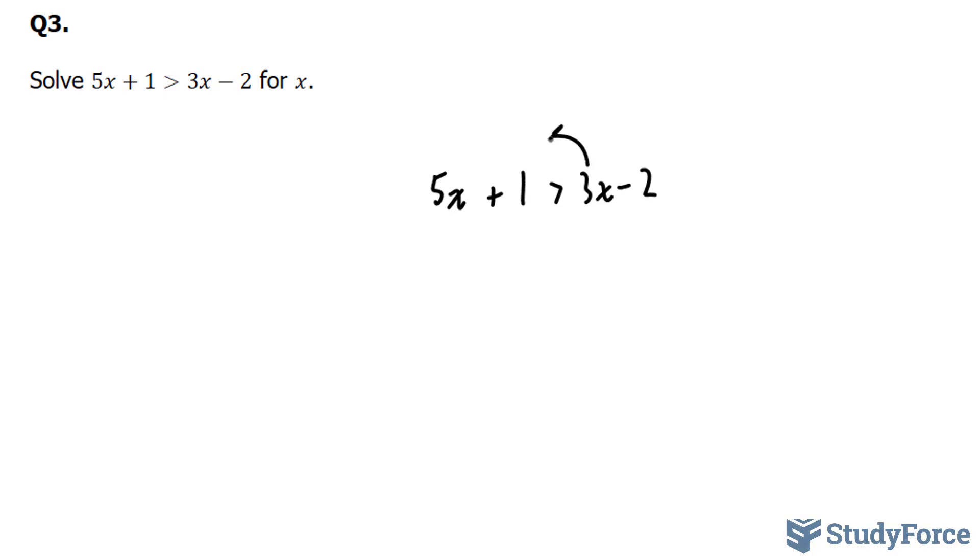So I'm going to bring this over, and I'm going to bring this over. We end up with 5x minus 3x is greater than negative 2 minus 1.